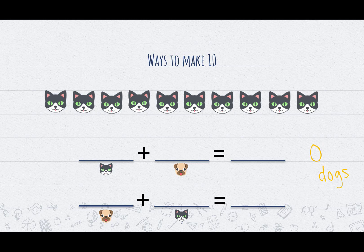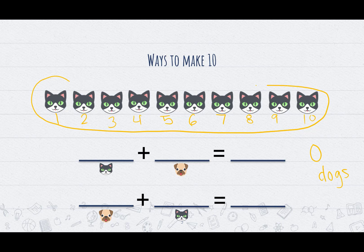Let's count how many cats we have: 1, 2, 3, 4, 5, 6, 7, 8, 9, 10. We circle our group — we have a group of 10 cats and a group of 0 dogs, because we don't have any dogs in our picture.